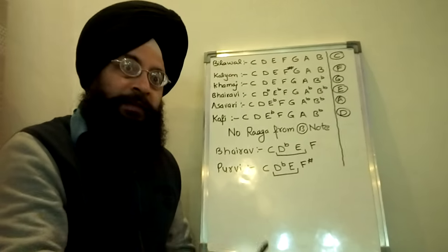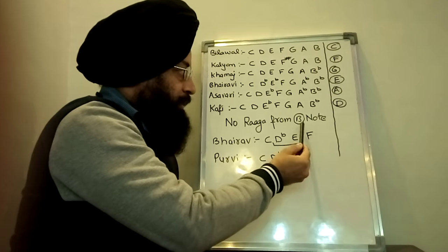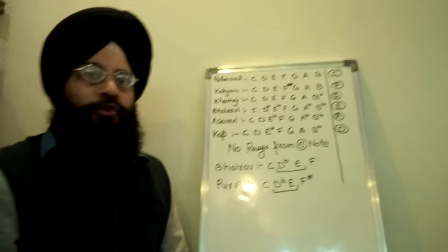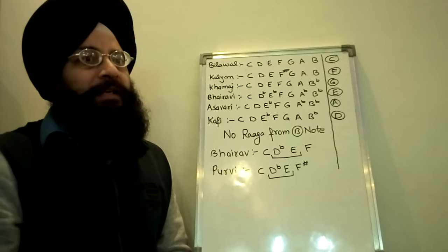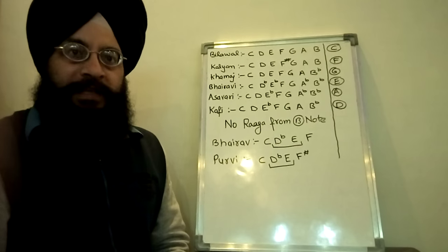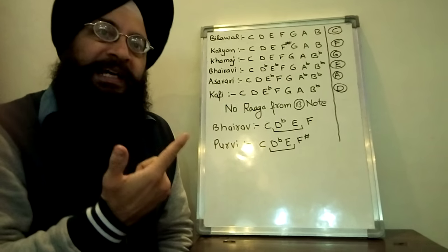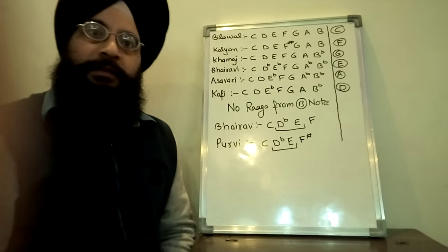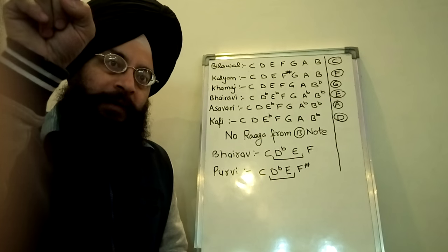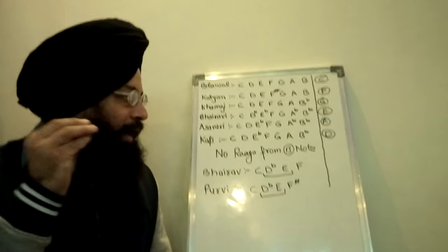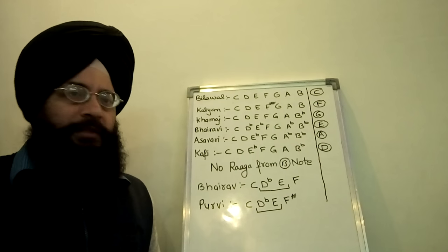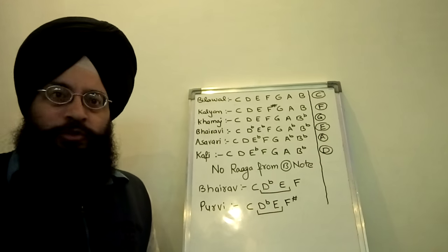Now, out of the 7 shuddha svars, 6 have already been discussed. We are left with the 7th white key, that is B note. As of now, you cannot have any raga by taking B as Sa and playing all the white keys. The reason is that if you take B as Sa, then the Pa will fall on F sharp, which is a black key, so for playing Pa you have to press the slider. Pa is a compulsory note in almost all ragas with very few exceptions, and that is why B is excluded from this category.